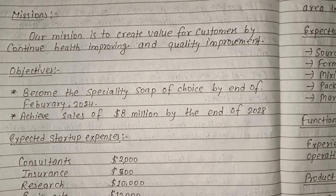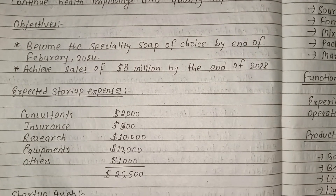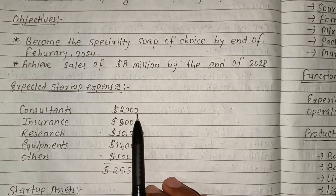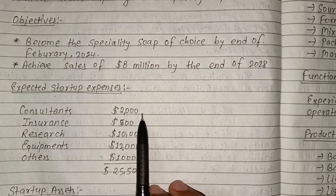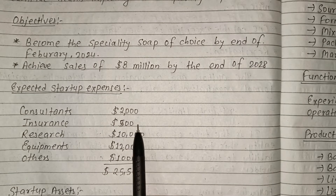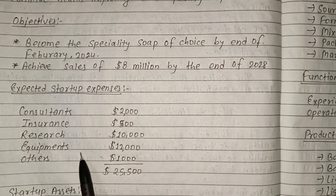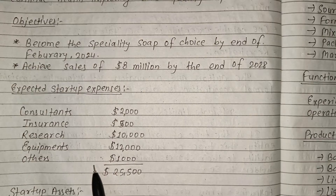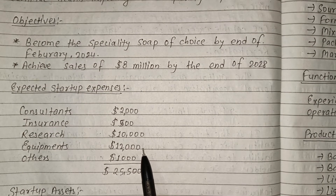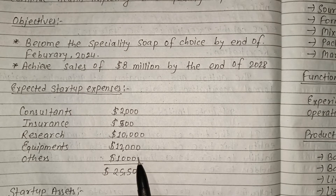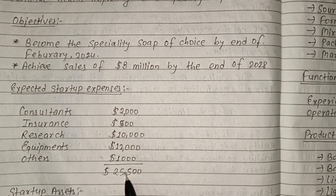Our expected start-up expenses include: $2,000 initial costs, insurance is $5,000, research and development is $10,000, equipment is $12,000, and others are $100,000, for a total of $25,000.